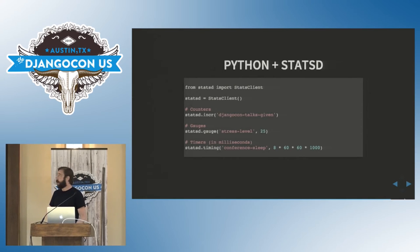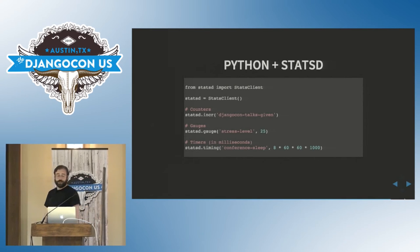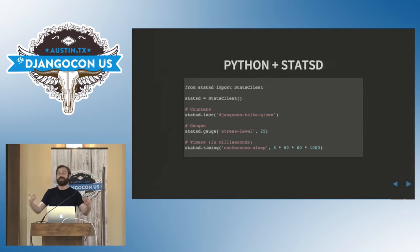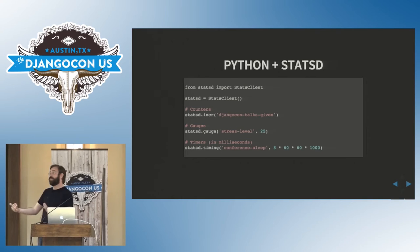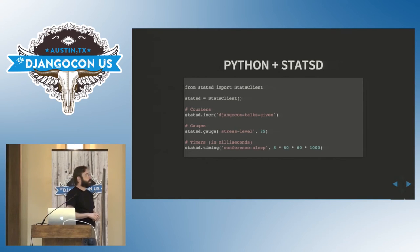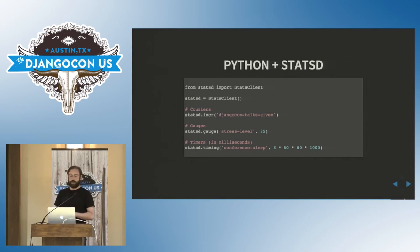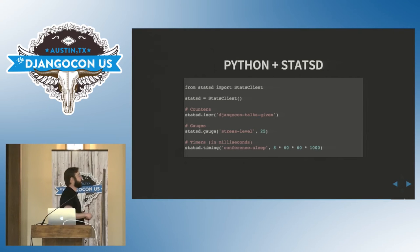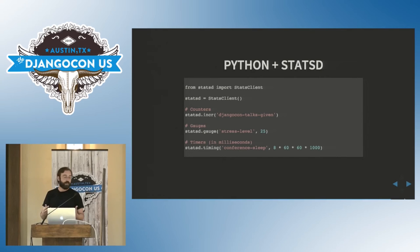So how do we do this with Python? The StatsD API is very simple. You get a StatsD client and then you have a counter that you can increment or decrement, or increment by more than one. You can have gauges — so right now my stress level's at 25% out of 100. And then you can do timing: how long did I sleep last night — about eight hours, just stored in milliseconds. So you can have timings of how long did this particular thing take.